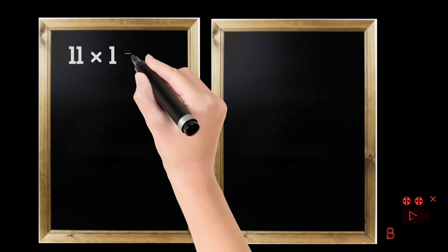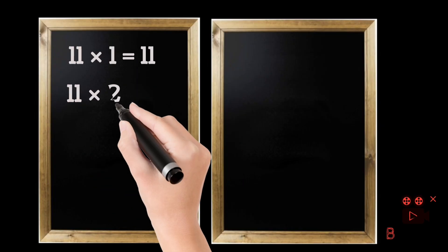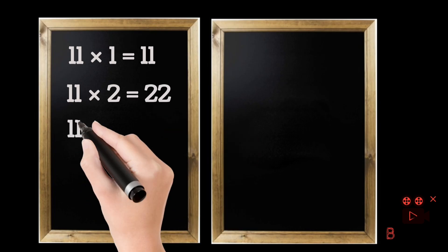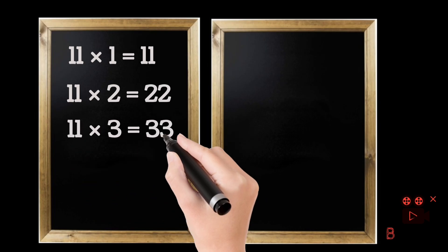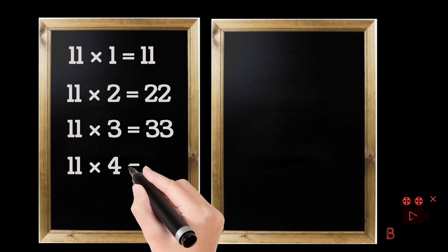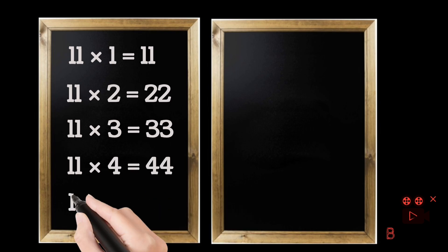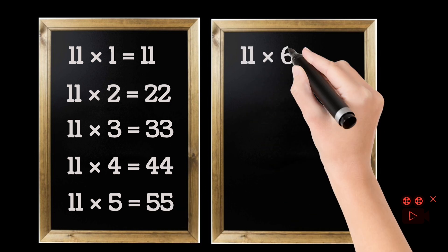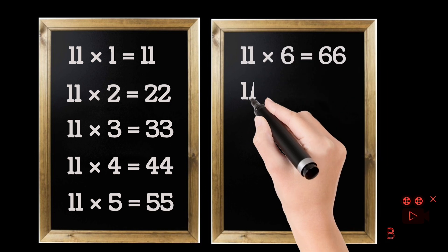11 ones are 11. 11 twos are 22. 11 threes are 33. 11 fours are 44. 11 fives are 55. 11 sixes are 66.